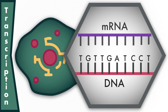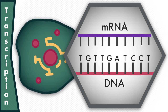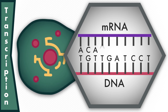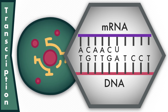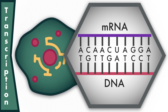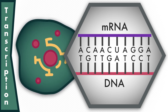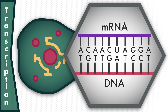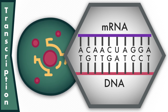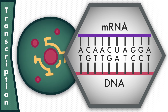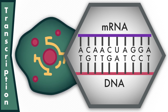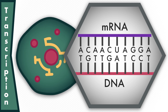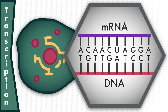Nucleotides, with the help of enzymes, move along one strand of the exposed gene to form a molecule of mRNA. The purpose of mRNA is to encode the information for a single protein and leave the nucleus with the plans.